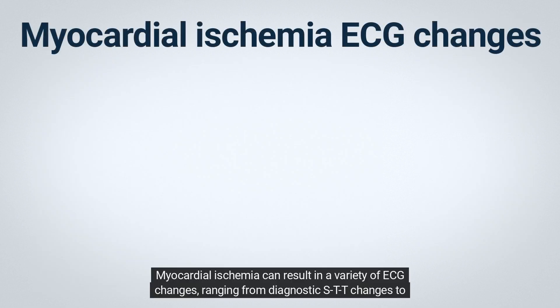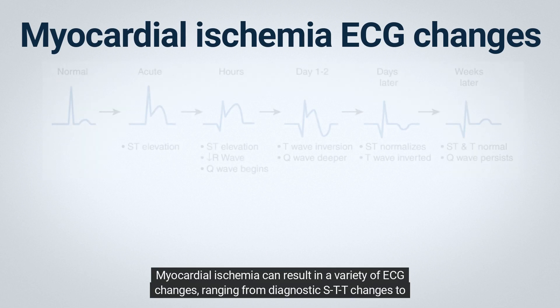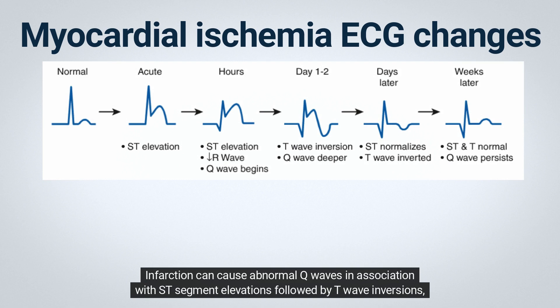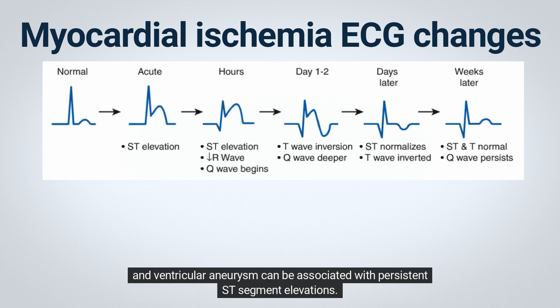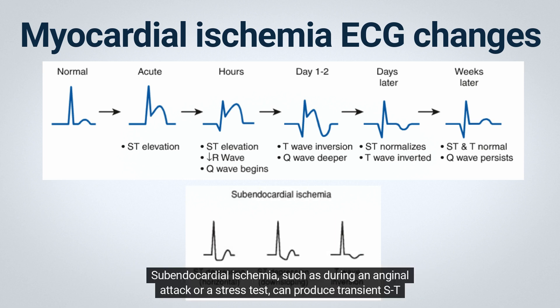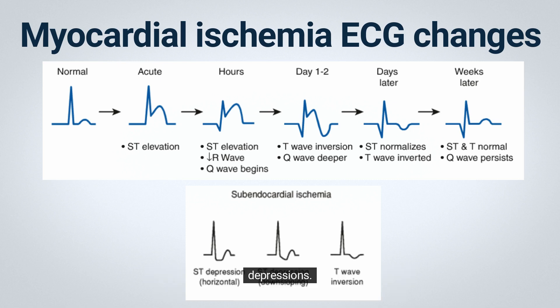Myocardial ischemia can result in a variety of ECG changes ranging from diagnostic ST-T changes to non-specific ST-T changes. Infarction can cause abnormal Q waves in association with ST segment elevations followed by T wave inversions, and ventricular aneurysm can be associated with persistent ST segment elevations. Subendocardial ischemia, such as during an anginal attack or a stress test, can produce transient ST depressions.